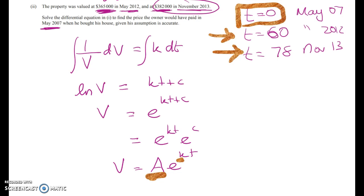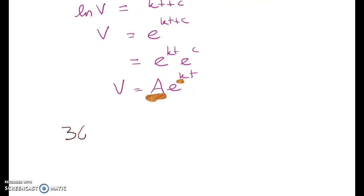So substituting in, 365,000 is equal to A e to the k times 60 and then the next price was 382,000 and that equals A e to the k times 78. Right so two equations two unknowns. Slightly different pattern from usual.